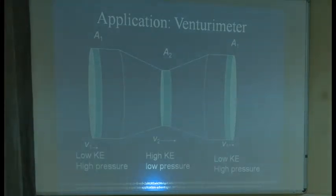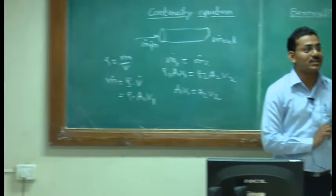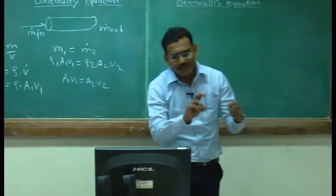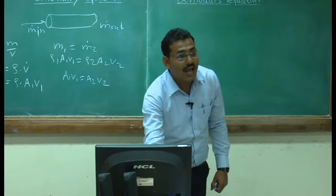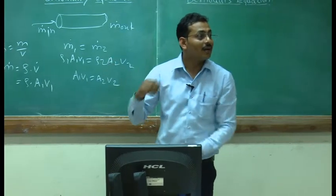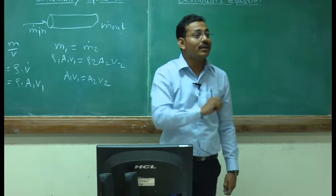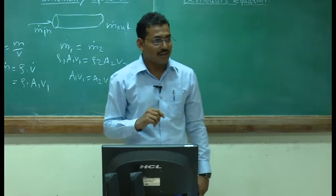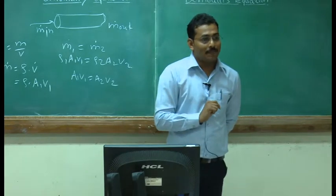Why learn this? We need to apply it somewhere. This one is the venturimeter — it is an application. Here the same previous concept is repeated, but now we see how we apply it. In the venturimeter there is a decrease in area and a change in velocity. If I apply a manometer to the two junctions, I can measure the differential height, and this differential height gives us the discharge. This is the application and use of Bernoulli's theorem.